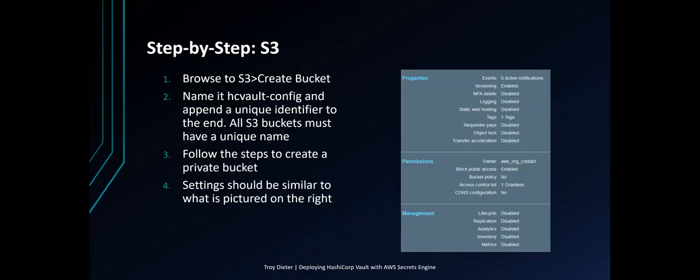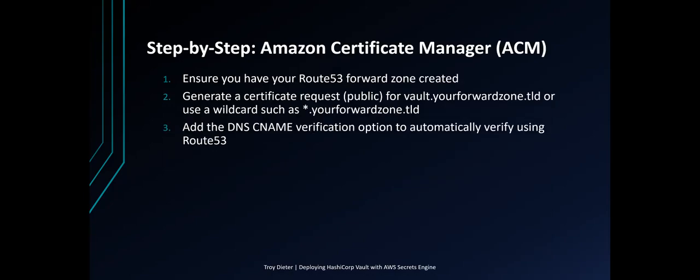Next, we'll create the S3 bucket where the configuration and the Vault unlock and unseal keys will be stored. Browse to S3 and create the bucket named 'hcvault-config' and append a unique identifier to the end, as all AWS S3 buckets must have a unique name. Follow the steps to create a private bucket — do not allow public access. Settings should be similar to what is pictured, with block public access enabled.